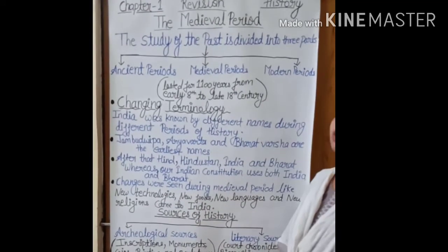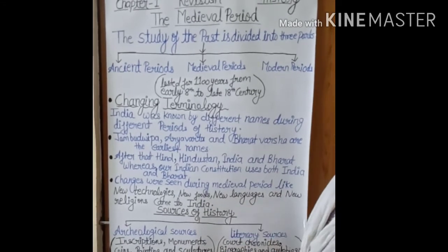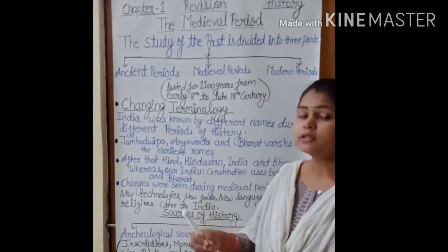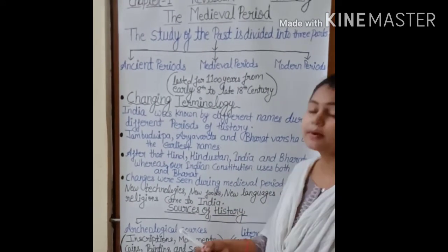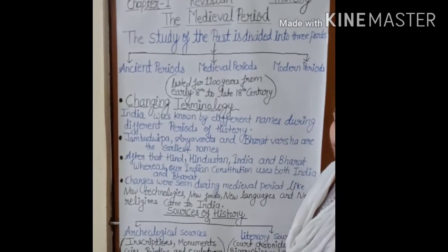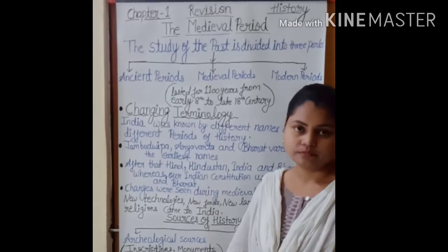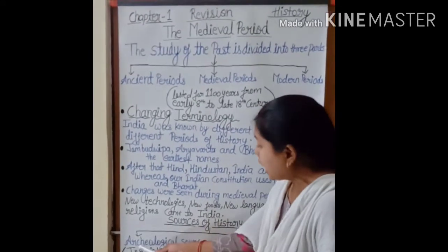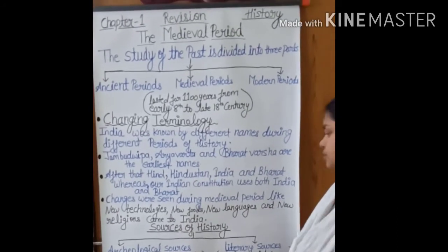The next topic was sources of history. What are the sources which give us information about history? There are two main sources of history that we discussed: archaeological sources and literary sources.